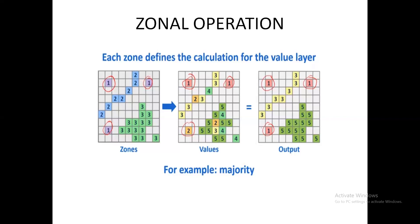This is how zonal operation works: you work on one particular zone first. In that zone, you look for the feature values present. Among the feature values, you compare and take the majority value, then mark all feature values of that zone as the major integer value. In our example, the major value is one, so all three are made as one. The third value of zone one was two, but after considering the major value, we made it as one in the output.